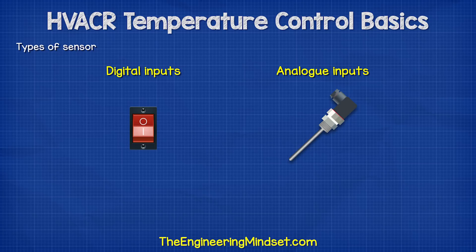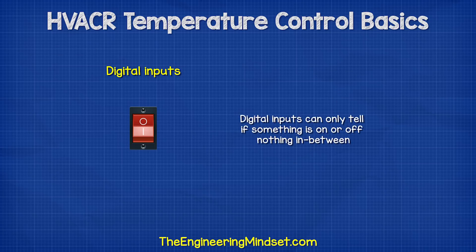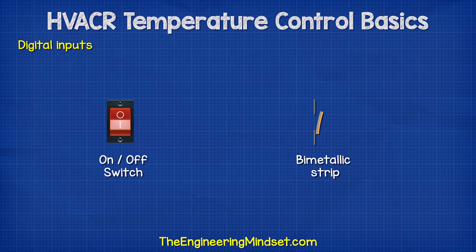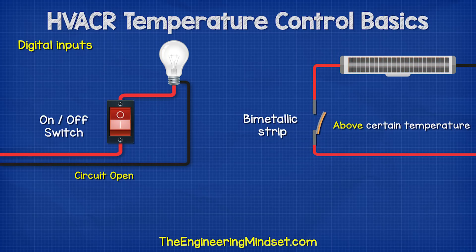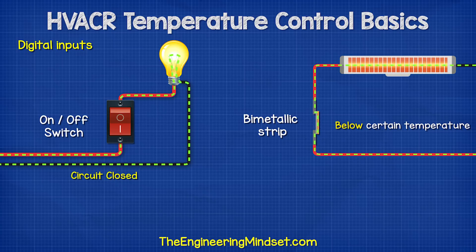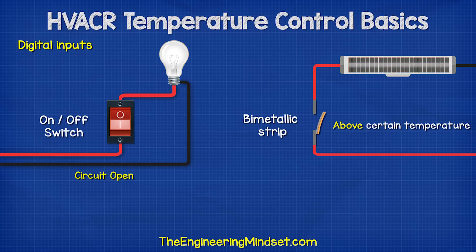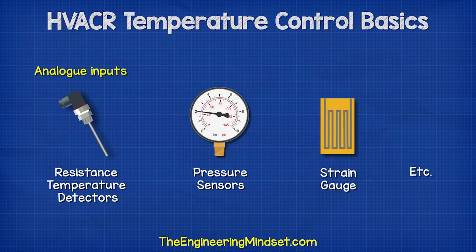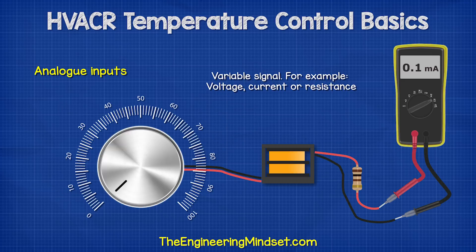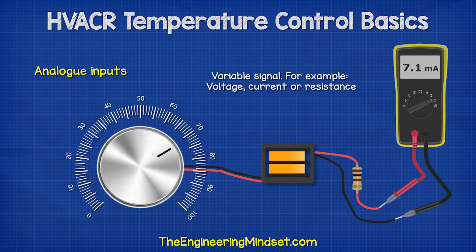We have two main types of sensors: digital and analog. Digital inputs can only tell if something is on or off — nothing in between. For example, an on-off switch or a bimetallic strip. The circuit is either open or closed, so we can only tell if the temperature is above or below a certain temperature. Analog inputs vary their signal — they might vary in resistance, voltage, or current between a minimum and maximum value. So we can use these to determine the exact temperature or pressure.